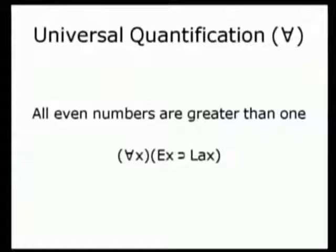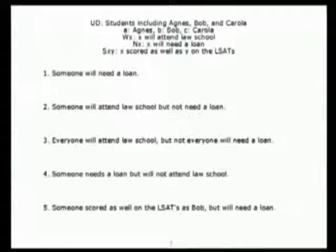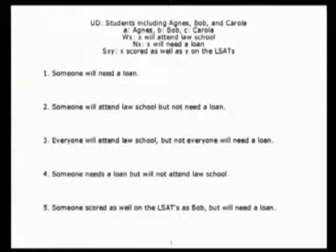That's pretty much all you'll be doing this week in the Logic Cafe — working on particular examples. The universe of discourse this time is students. Among the students — it could be many more than 3 — are A, B, and C: Agnes, Bob, and Carol. The predicates are: W for 'will attend law school,' N for 'will need a loan,' and S for the binary predicate 'scored as well as on the LSATs.'